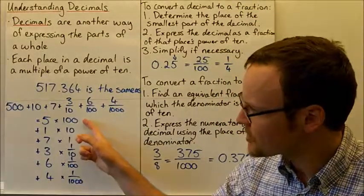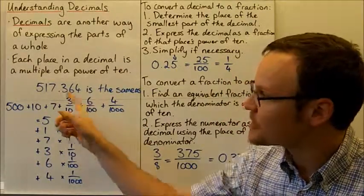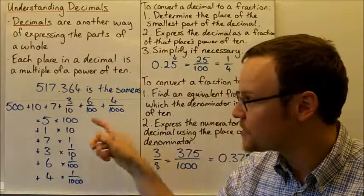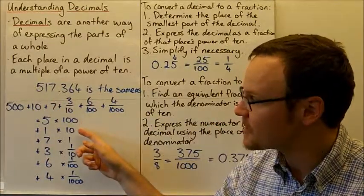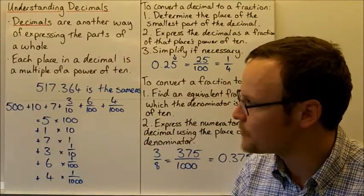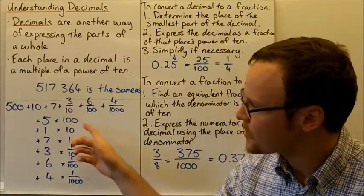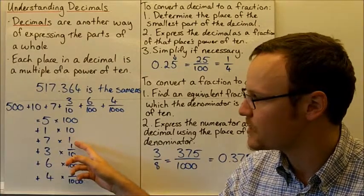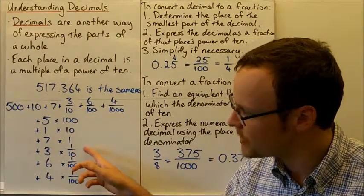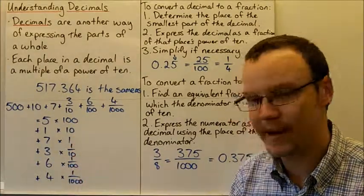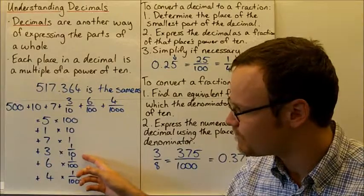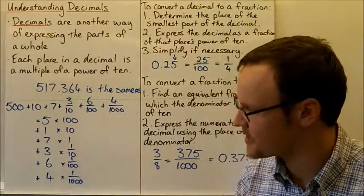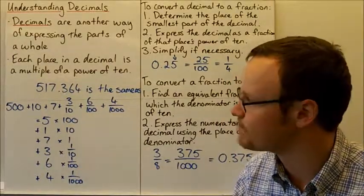So you can see the pattern. As the decimal point moves, it's a different power of 10. So this is 10 squared, that's 10 to the power of 1, 10 to the power of 0, 10 to the power of negative 1, as they go down. You can see the pattern as it moves down.